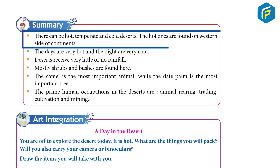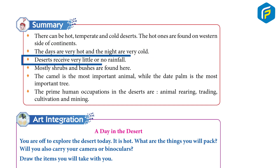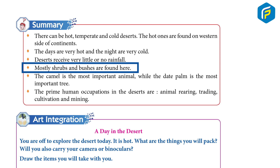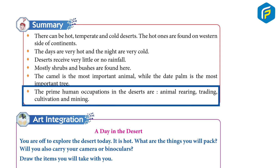Summary: There can be hot and cold deserts. The hot ones are found on the western side of the continent. The days are very hot and nights are very cold. Deserts receive very little or no rainfall. Mostly shrubs and bushes are found here. The camel is the most important animal, while the date palm is the most important tree. The prime human occupations in the desert are animal rearing, trading, cultivation, and mining.